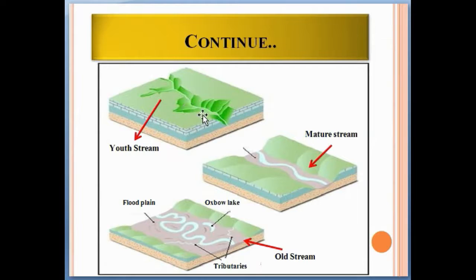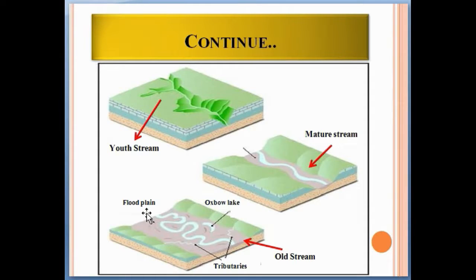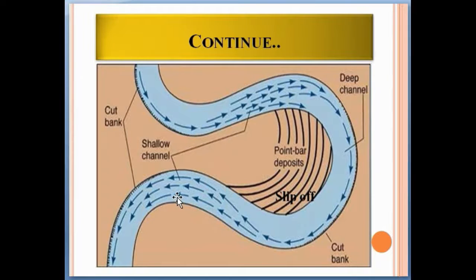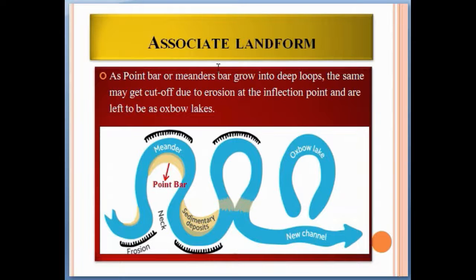In the youth stage, rocks are cut down with high intensity due to the force of water. In the mature stage the river transitions, and in the oldest stage the river flows at a very slow rate. Due to the floodplain, sediment is deposited along the river bank — this is known as floodplains. In this stage, point bars form, as seen here: this is the meander, this is the point bar deposit, this is the cut bank, and this is the slip off.